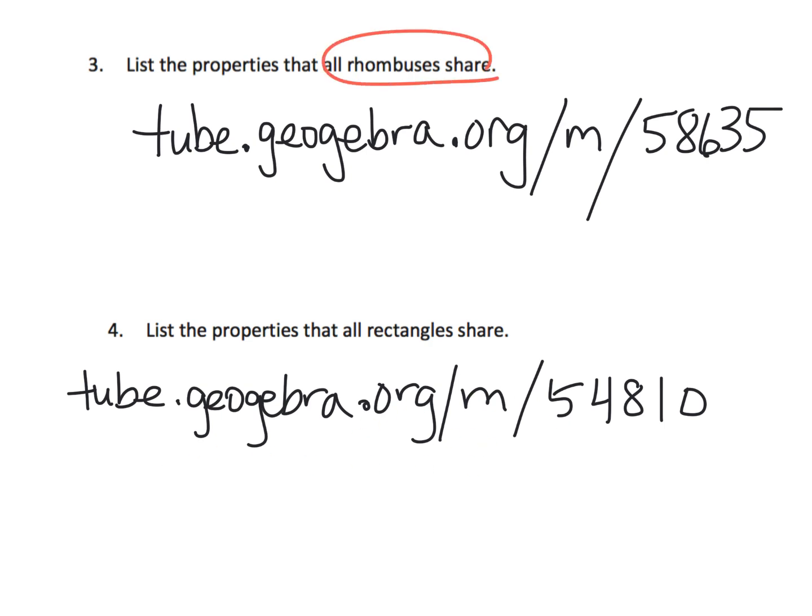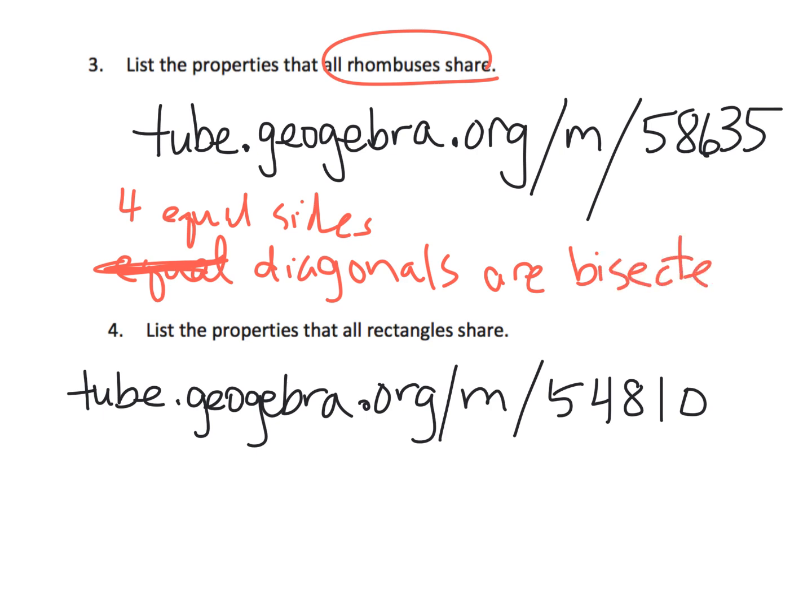Parents and teachers, what we're going to be looking for is for a rhombus, we're looking for four equal sides. We're going to be looking for students to talk about the diagonals - that the diagonals don't have to be equal, but the diagonals are bisected. Remember what that means - each diagonal is cut in half by the other diagonal, cut into two equal pieces. There's other things we could put in that list. We're going to have opposite angles being equal, consecutive angles will have a sum of 180. There's a bunch of things that students might say.